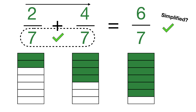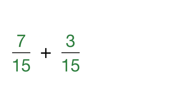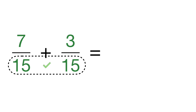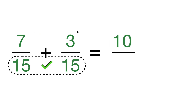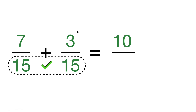We're going to do a few more examples without the visual representation, focusing just on the numbers. We're going to have 7/15 plus 3/15. First step: check that the denominators are the same — they are. Step 2: add the numerators across the top. 7 plus 3 gives us 10.